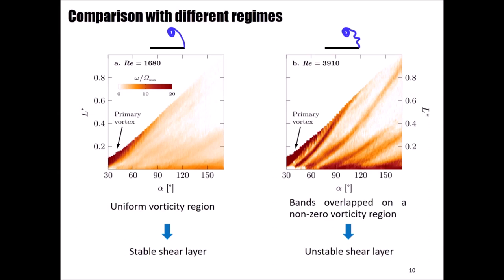With Reynolds number increased to 3910, vorticity bands appear in the plot, but the bands this time are not separated by non-zero vorticity regions as it was before. This made us think of a topology where the vortices appear as a result of an unstable and wavy shear layer.